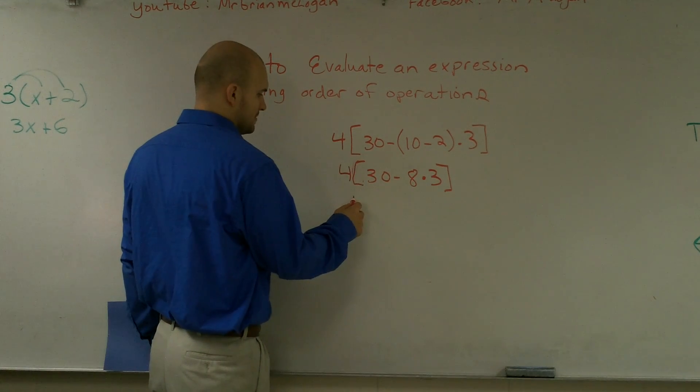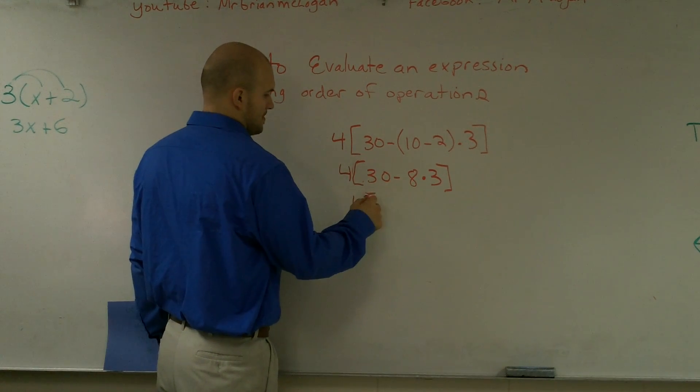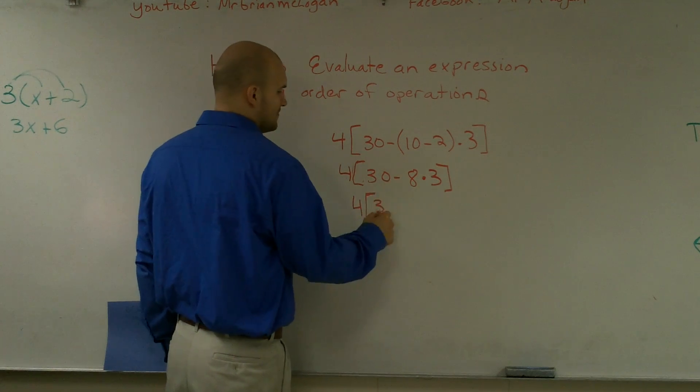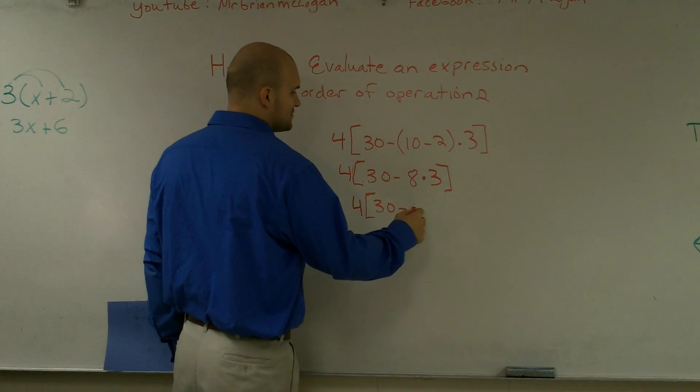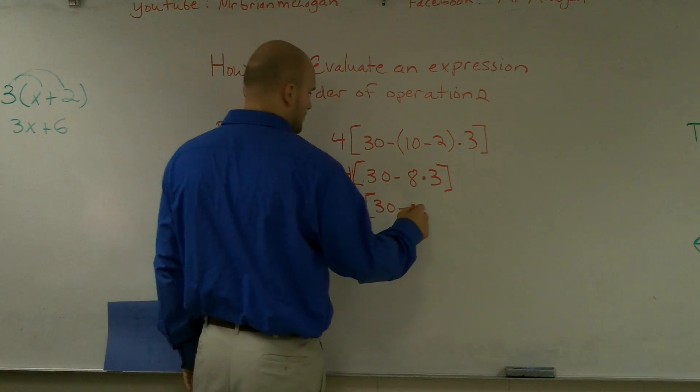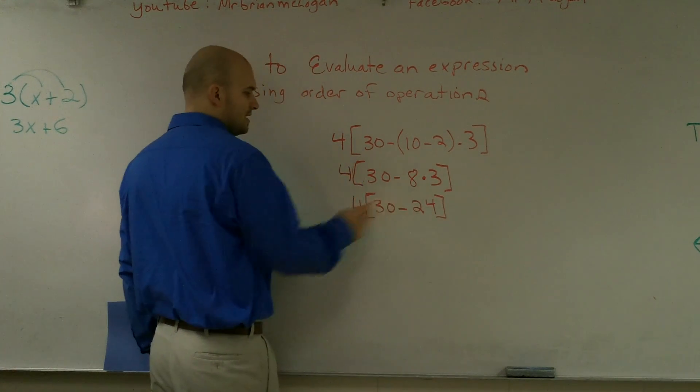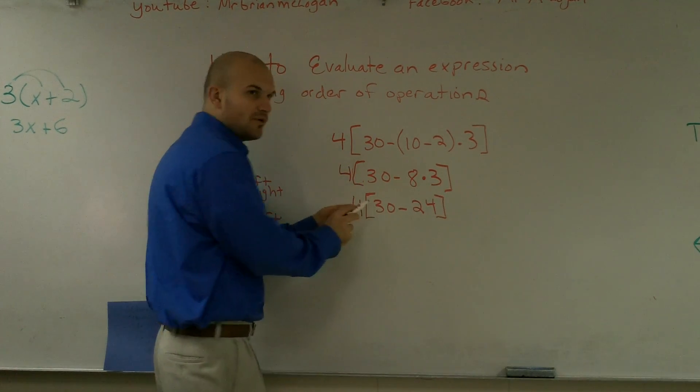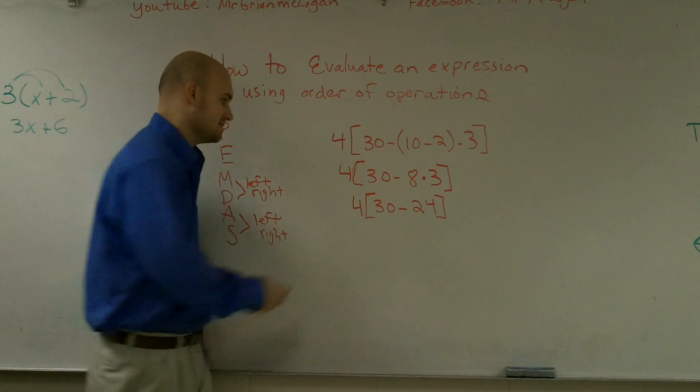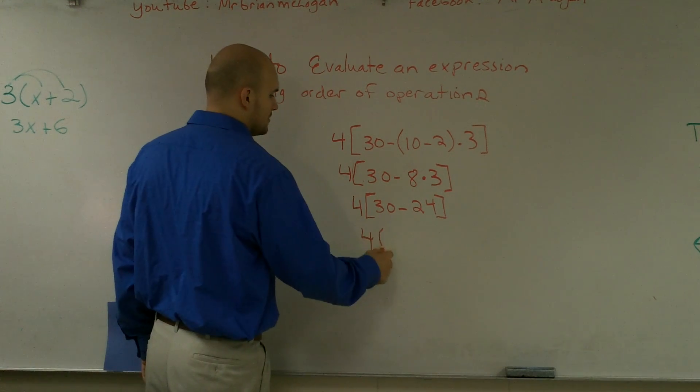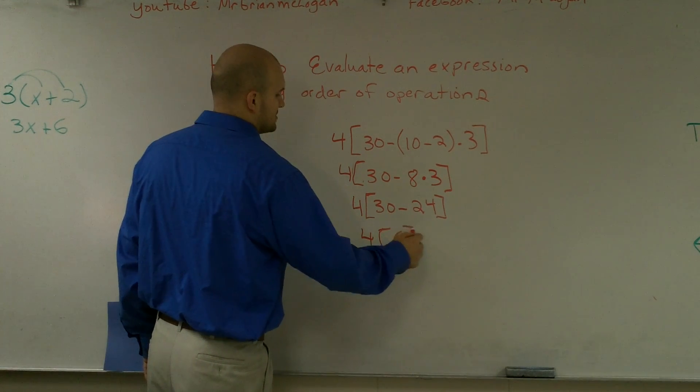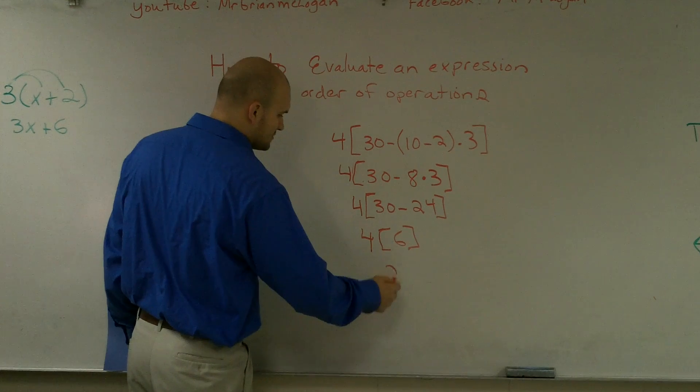So I do 4 times 30 minus 8 times 3 which is going to be 24. And then again, I'm not multiplying this 4 yet because this 4 is outside the parentheses. So therefore I have 4 times 6, and then therefore that's going to give me 24.